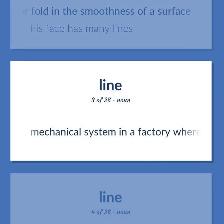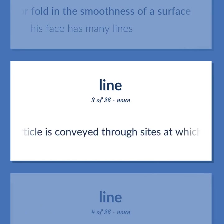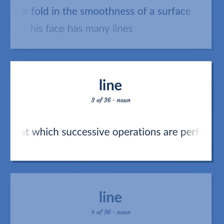Line: mechanical system in a factory whereby an article is conveyed through sites at which successive operations are performed on it.